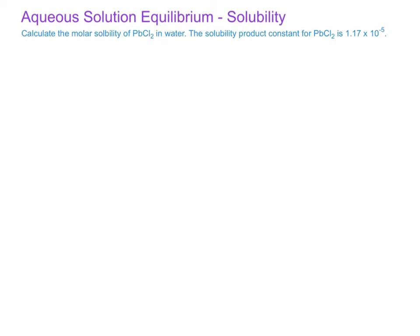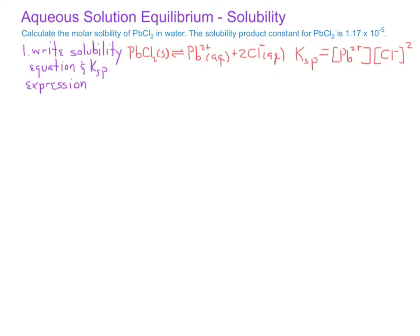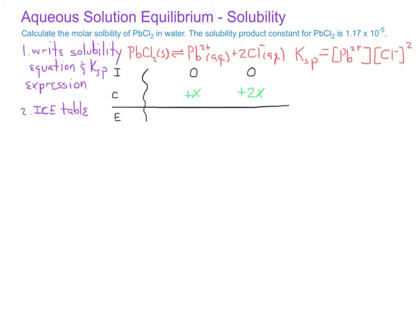We'll begin by writing the solubility equation and the Ksp expression for lead chloride dissolving in water. After we do this, we'll draw the ICE table. We'll determine the change values for the lead and the chloride ions. For the chloride ion, remember that it will change by 2x, since there are 2 moles of chloride ion for every 1 mole of lead ion. The equilibrium values will be x for the lead ion and 2x for the chloride ion.